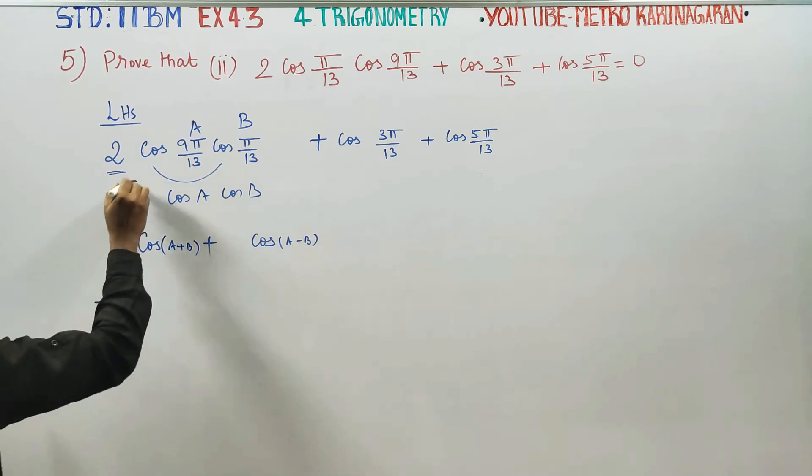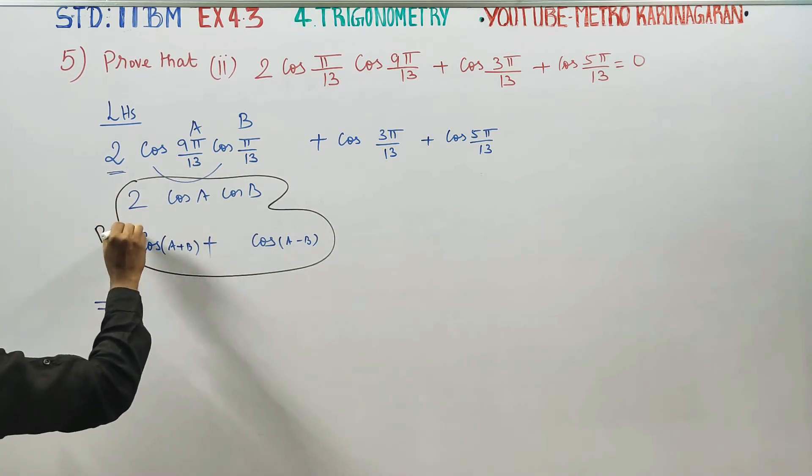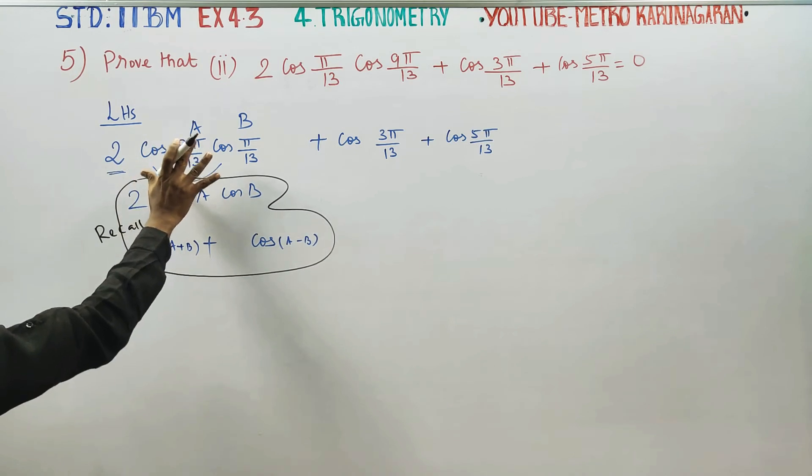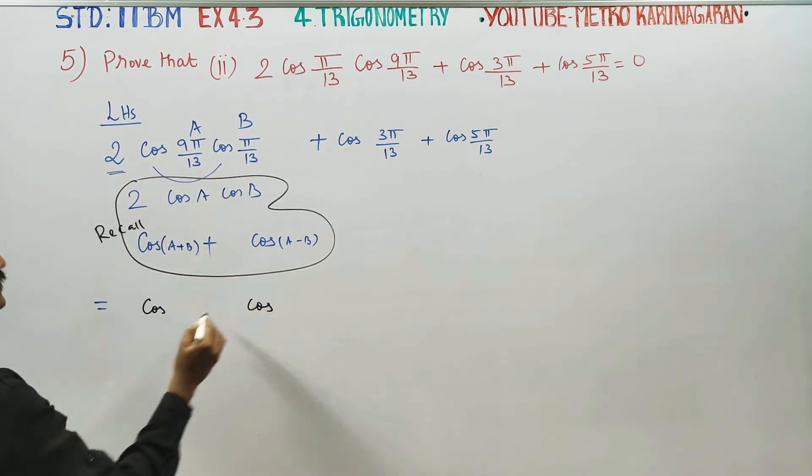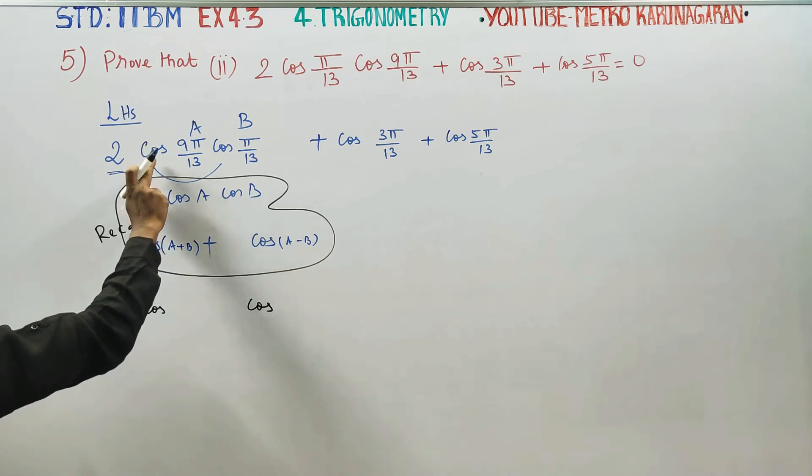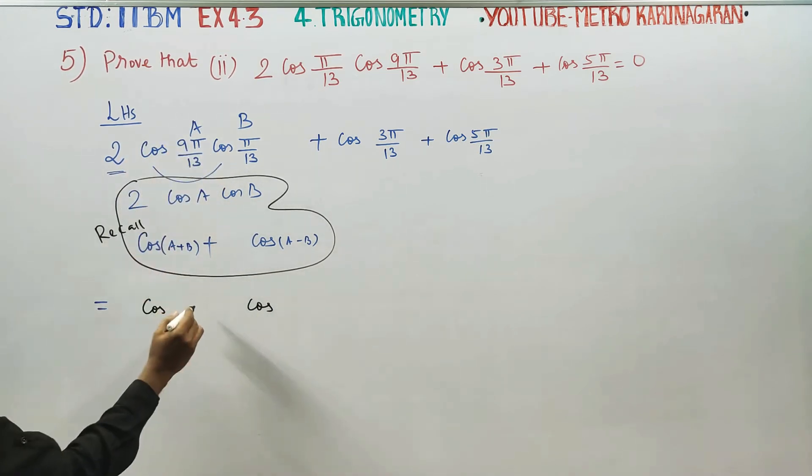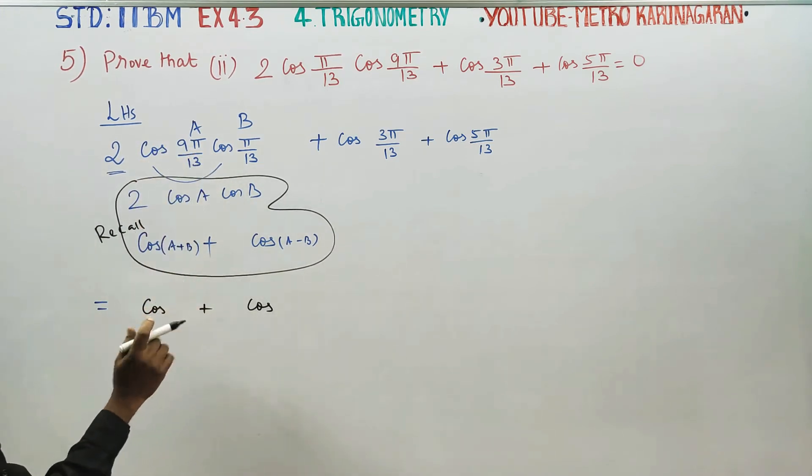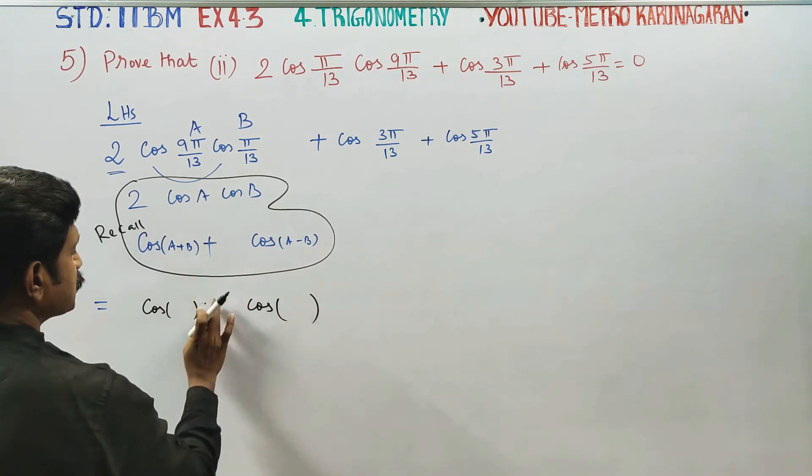Now recall this formula. If you have cos-cos, you will have cos-cos, sin-sin. Then you will have sin-sin minus. If you have A minus B and A plus B, then you will have A minus B and A plus B.